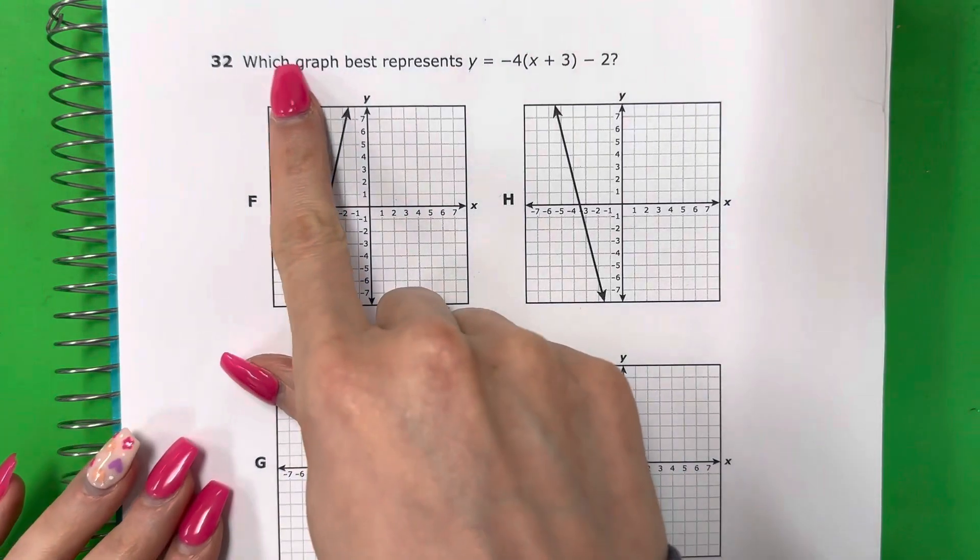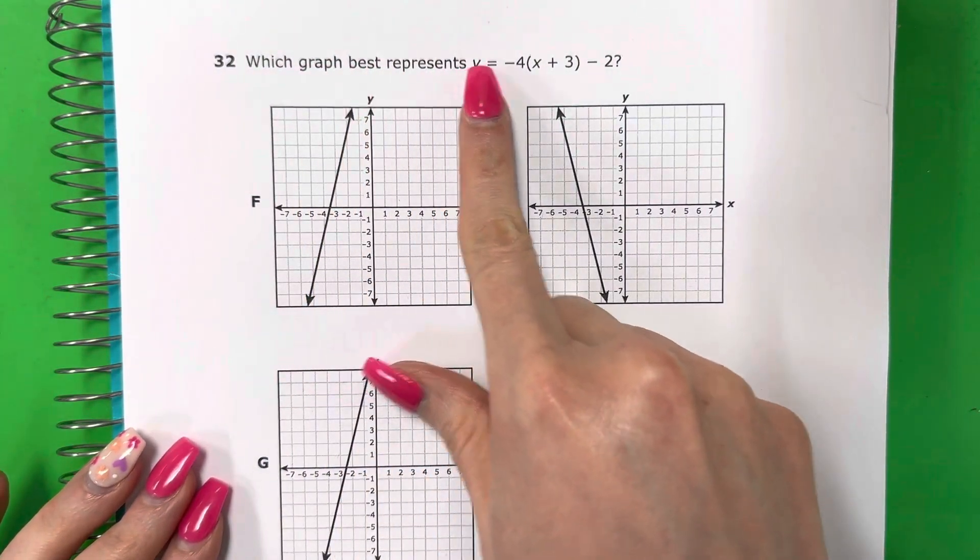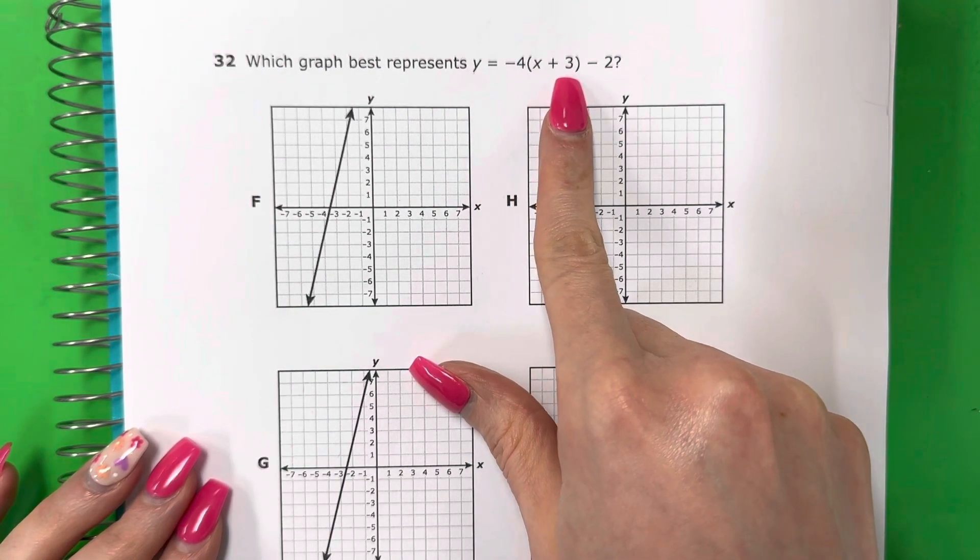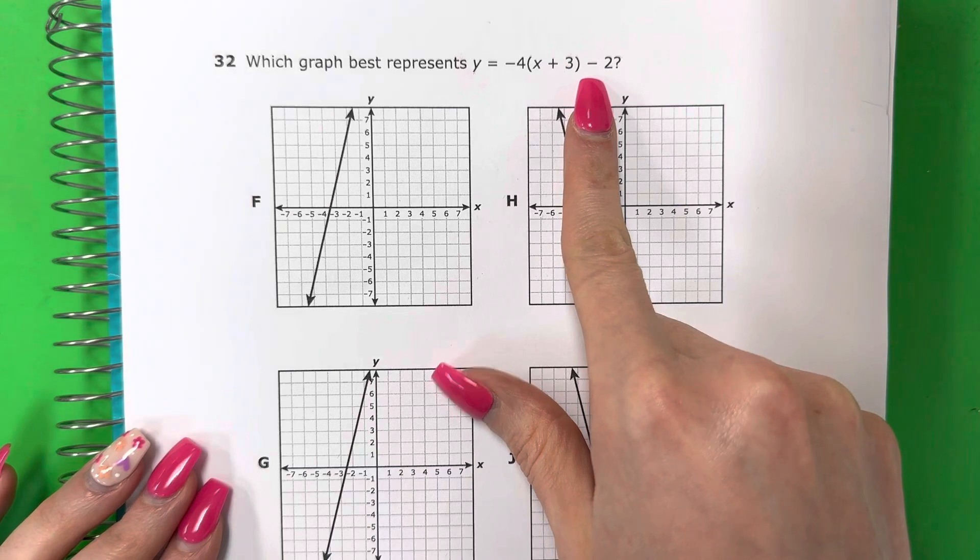Question 32. Which graph best represents y equals negative 4, open parentheses, x plus 3, close parentheses, minus 2?